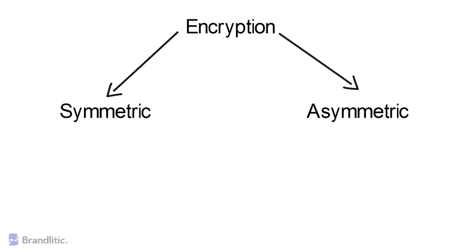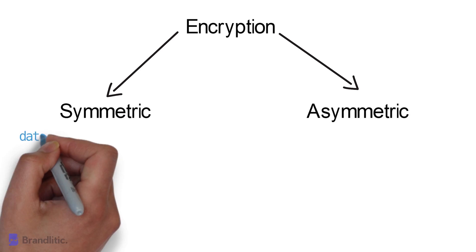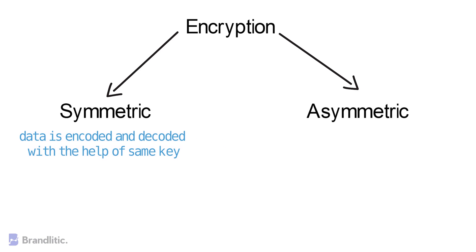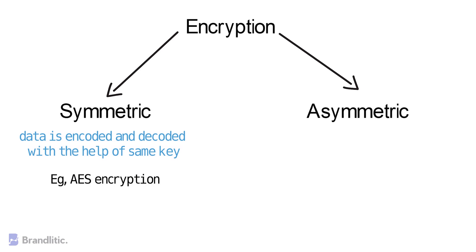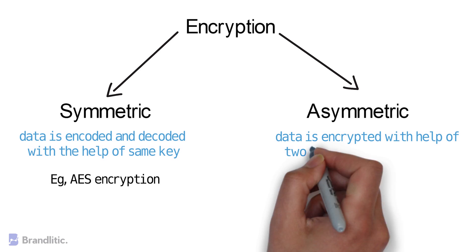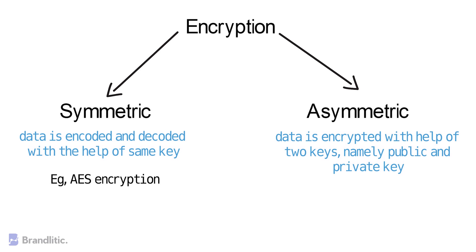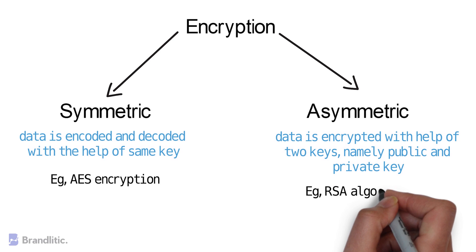In the case of symmetric encryption, data is encoded and decoded with the help of the same key — for example, the AES encryption algorithm. But in the case of asymmetric encryption, data is encrypted with the help of two keys, namely a public key and a private key. An example of this includes the RSA algorithm.